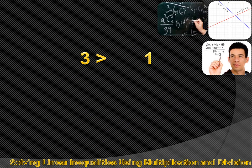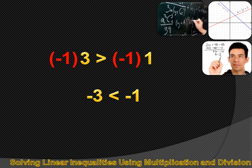For instance, you know that 3 is larger than 1. But if you multiply both sides by minus 1, you'd get minus 3 is larger than minus 1 — but that's not true. Minus 3 is smaller than minus 1. When you multiply both sides of an inequality by a negative number, or divide both sides by a negative number, you have to reverse the inequality sign. Less than becomes larger than, and larger than becomes less than.